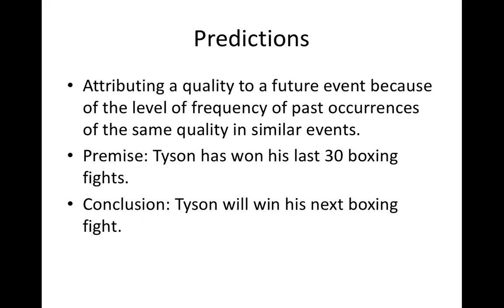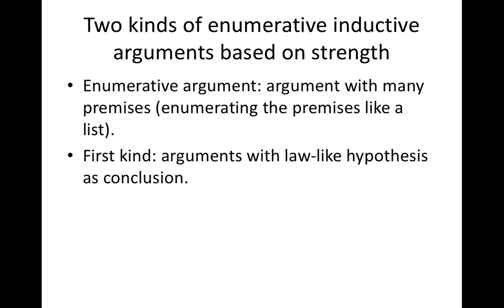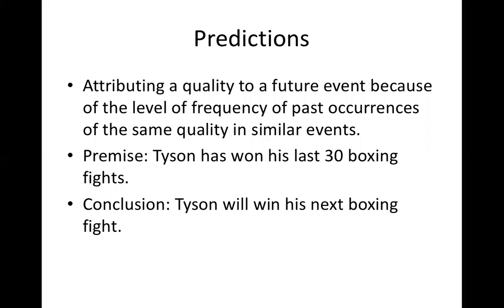Then we have predictions — attributing a quality to a future event because of the frequency of past occurrences of the same quality in similar events. Example: Tyson has won his last 30 boxing fights, therefore Tyson will win his next boxing fight. The point is that the future is not the same as the past — winning 30 fights doesn't necessarily mean you win the next one. The argument generates more than one conclusion. These are the different directions of extrapolation: from a part to a whole, from one property to a similar property, or from the past to the future.